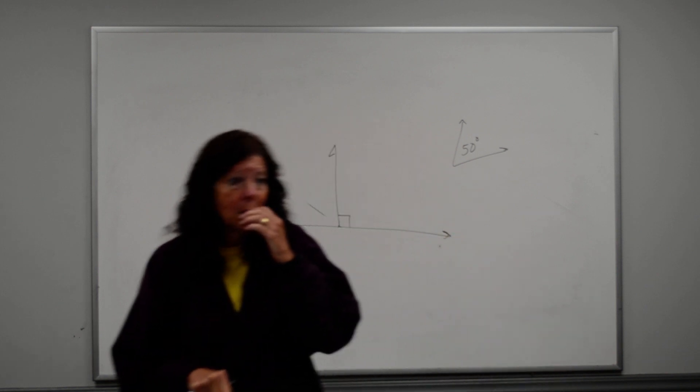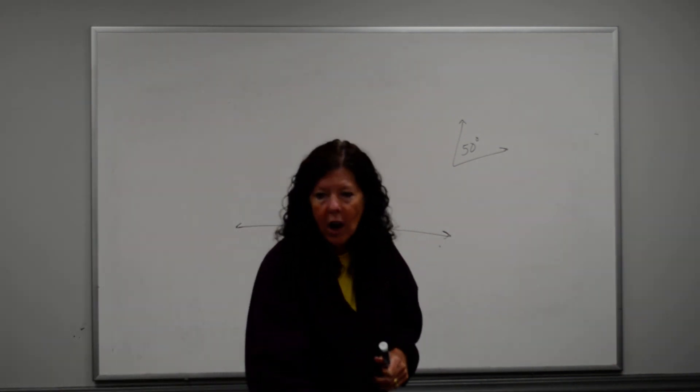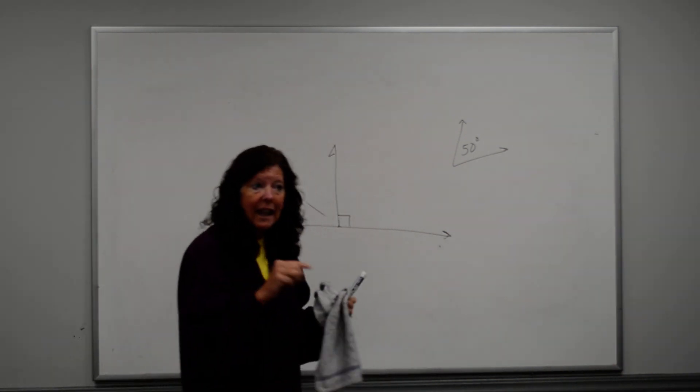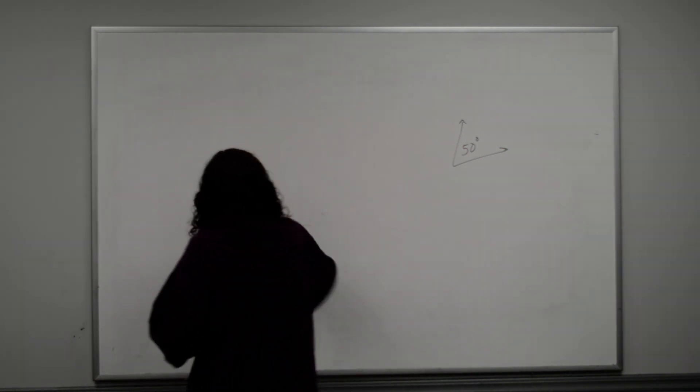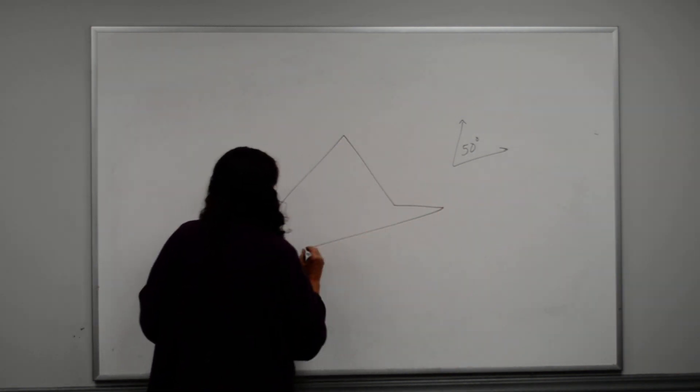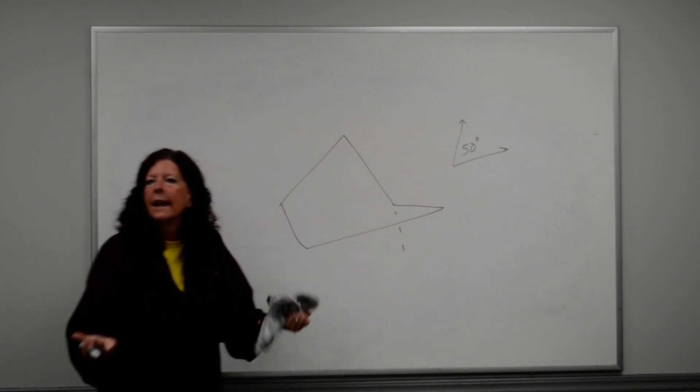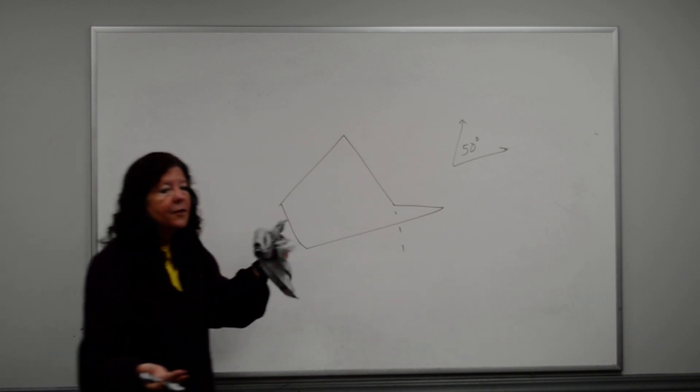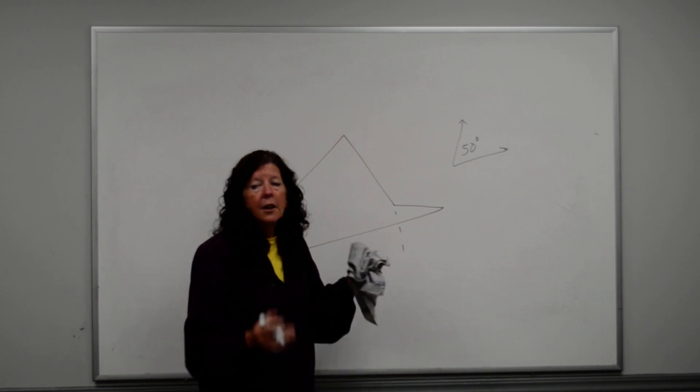So be able to classify according to the sides, but also be able to know whether it's concave or convex. Concave, if I extend any of the lines, it's going to go inside the figure. Okay? So this is an example of concave. Okay? Because when I extend that line, it goes inside. If you have a concave polygon, you cannot have a regular polygon. Okay?